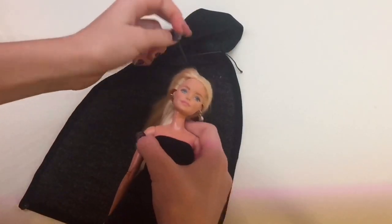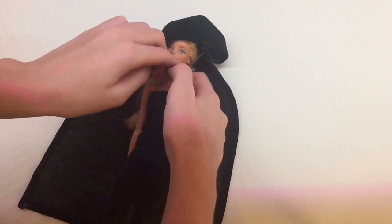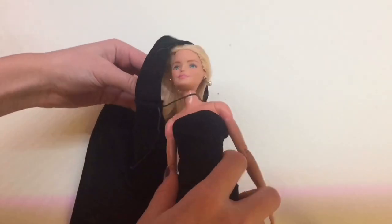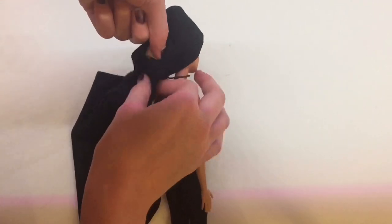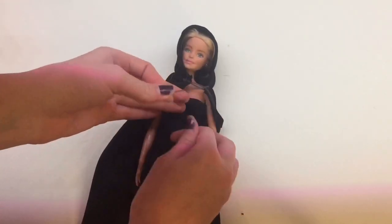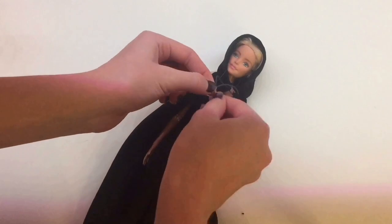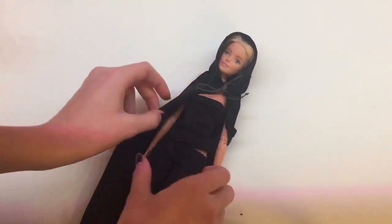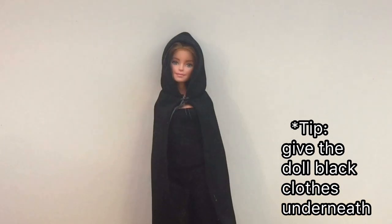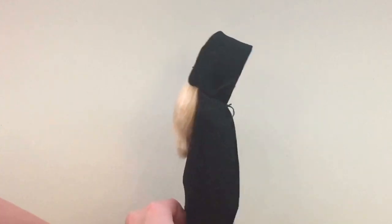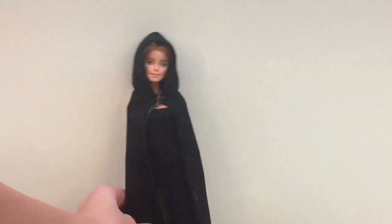Next, to put it on a doll, put that string over the doll's head, and then you can pull the doll's hair through that little hole we made earlier. Then tie the two strings in the front to make a cool cloak for your doll. As you can see, the hair is sticking through in the back.